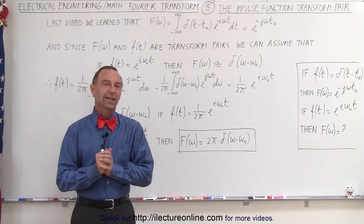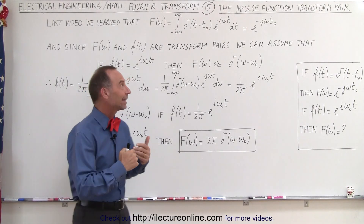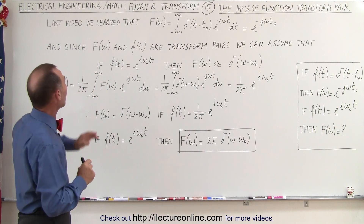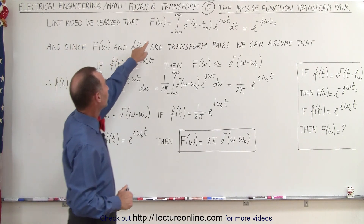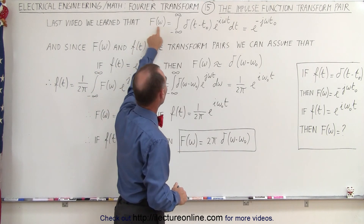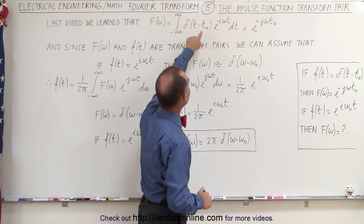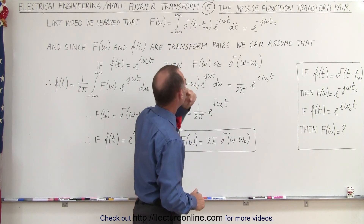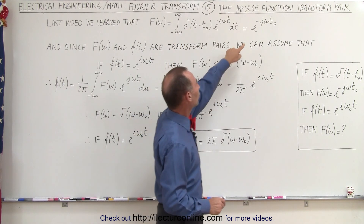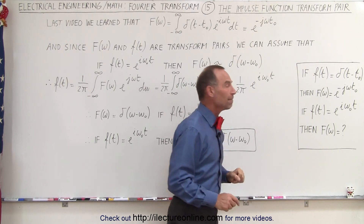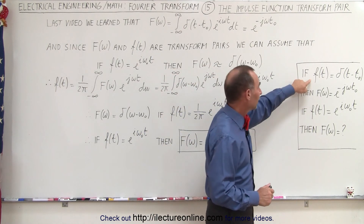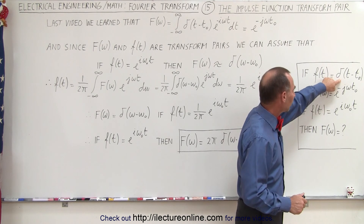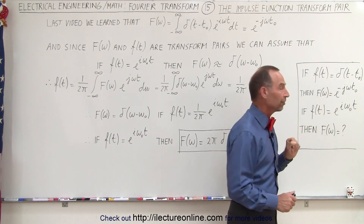Welcome to iLecture Online. Now let's take a look at this next transform pair. In the last video, what we saw was that when we took the Fourier transform of the delta impulse function δ(t − t₀), we got the result e^(−jωt). So we can conclude that if the input function is the delta function, the Fourier transform will be equal to this.